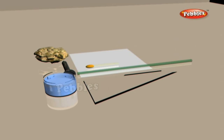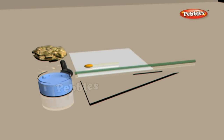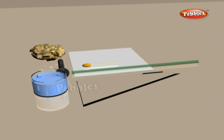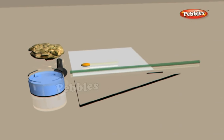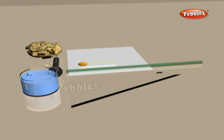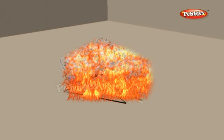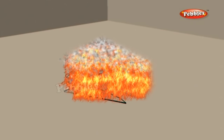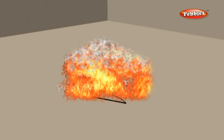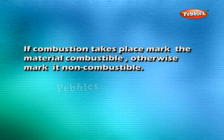Materials of combustion — collect some materials like straw, matchsticks, kerosene oil, paper, iron nails, stone pieces, glass, etc. Under the supervision of your teacher, try to burn each of these materials one by one. If combustion takes place, mark the material combustible; otherwise mark it non-combustible.